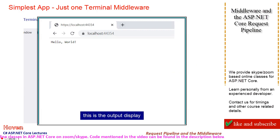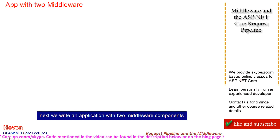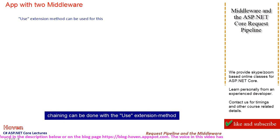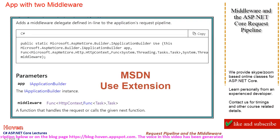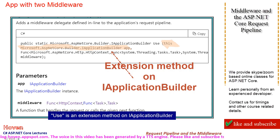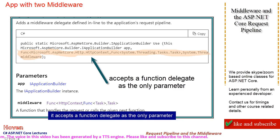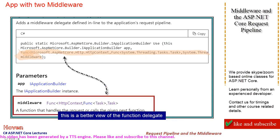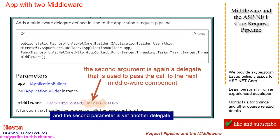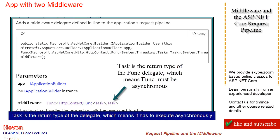This is the output display. Next, we write an application with two middleware components. The first component will be chained to the second. Chaining can be done with the Use extension method. Use is an extension method on IApplicationBuilder. It accepts a function delegate as the only parameter. The function delegate accepts an HTTP context as the first parameter, and the second parameter is yet another delegate. Task is the return type of the delegate, which means it has to execute asynchronously.